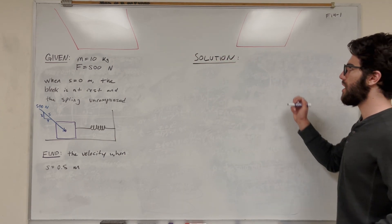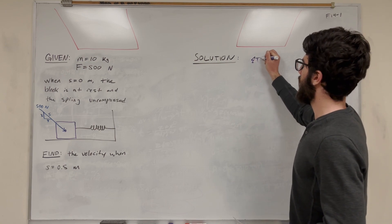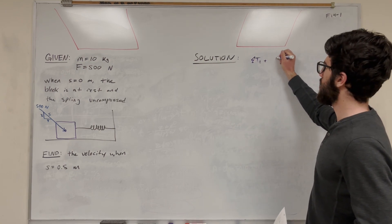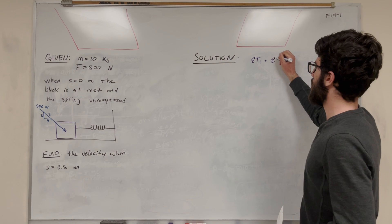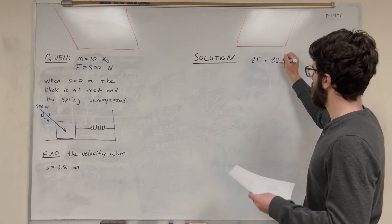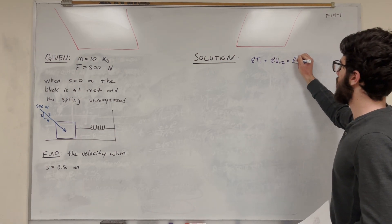How are we going to do this? Well, we're going to use the equation. The equation from the book is the sum of the initial energies plus the sum of the input of energies, U1 to 2, is equal to the sum of the final energies.